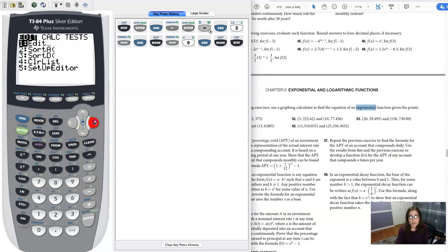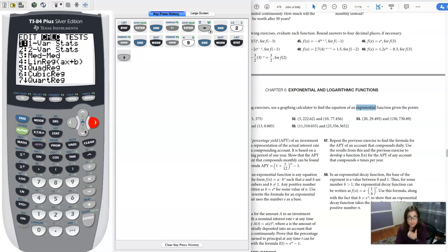We're going to hit stat. We're going to go over to calc and either you have the options memorized. Oh sorry, you're hearing my email come in. You might have the options memorized for stat calc exponential regression. It's down at zero. I actually think it's easier to head this way and there we go.